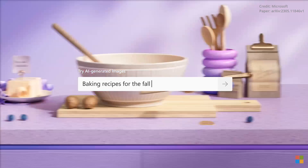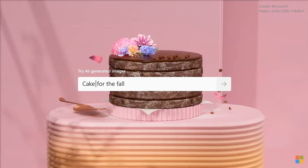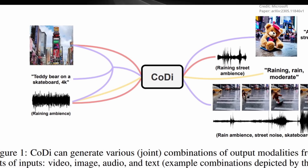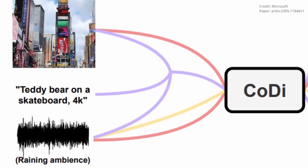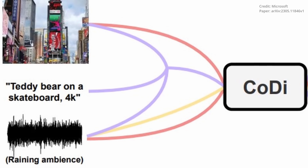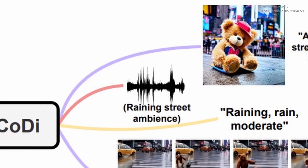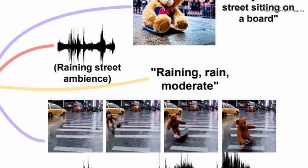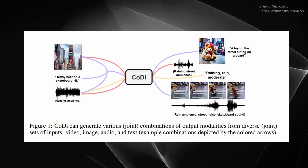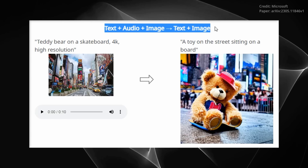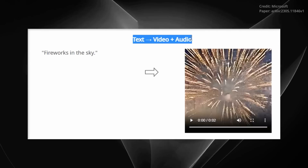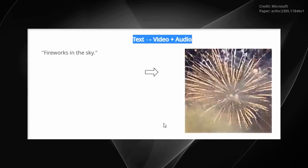Impressively, the researchers demonstrated CODI's capabilities where, in one instance, CODI was given the text prompt "Teddy Bear on Skateboard, 4K, high resolution," an image of Times Square, and the sound of rain. From these disparate inputs, CODI generated a short video of a teddy bear skateboarding in the rain at Times Square, accompanied by the synchronized sounds of rain and street noise. This example showcases CODI's ability to generate synchronized video and audio from separate text, audio, and image prompts.